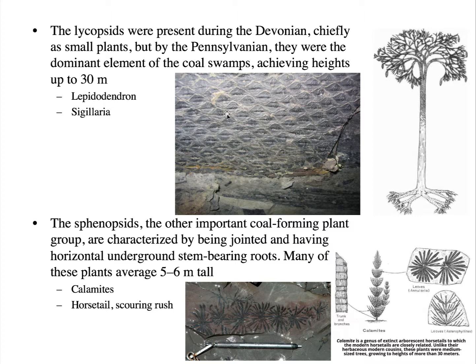The sphenopsids — which include modern horsetails and scouring rush — were represented in the Pennsylvanian by Calamites. These sphenopsids were characterized by being jointed and having horizontal underground stem-bearing roots, and they were anywhere from five to six meters tall. In the fossil record we often see their small leaves as carbonization deposits, and they had branching segmented trunks as well.